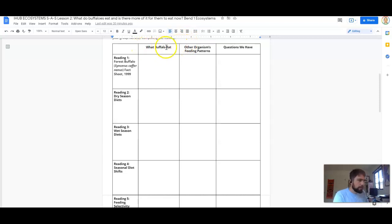And you're looking for what do the buffalo eat, what are the other organisms' feeding patterns, and what questions do we have as a group? So describe any patterns you notice in the readings about the buffaloes, what food they eat, and the other organisms. How is the food different from wet and dry seasons? What questions are you left with about the seasonal diets during the season in your reading? And what questions do you have from your readings about the other seasonal diets?